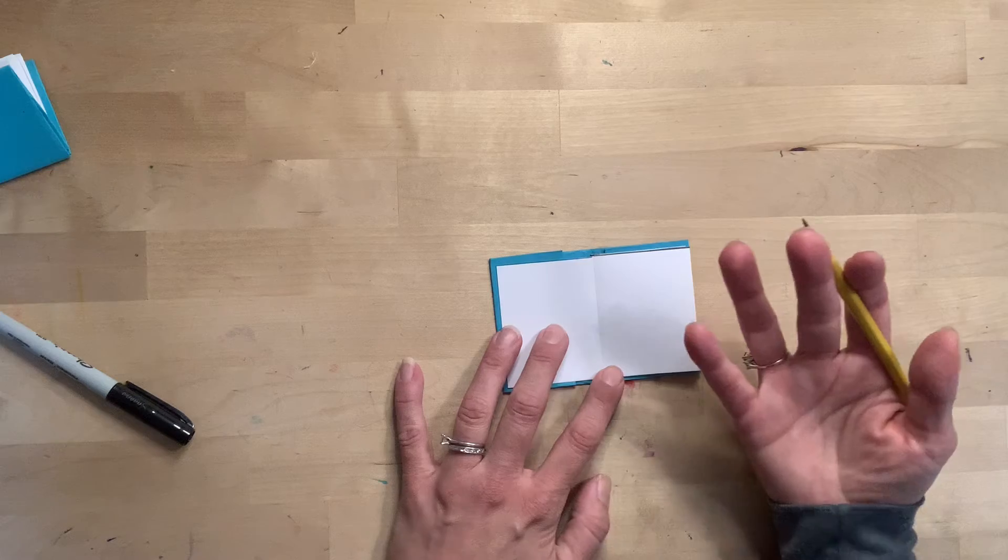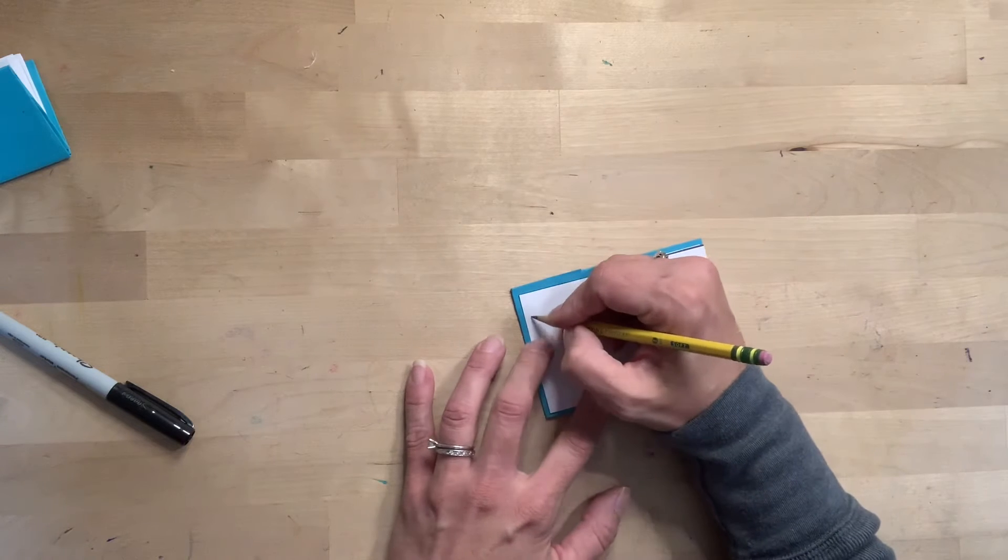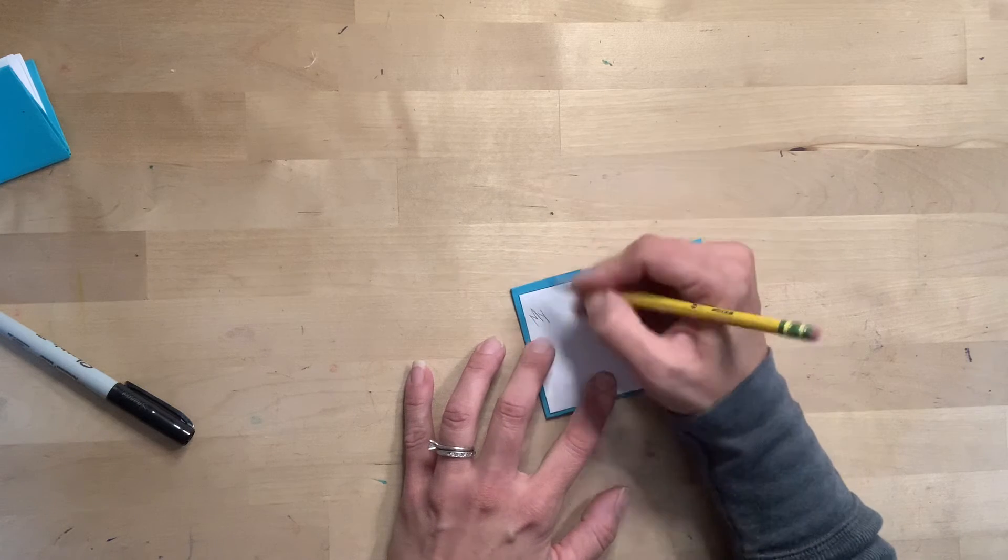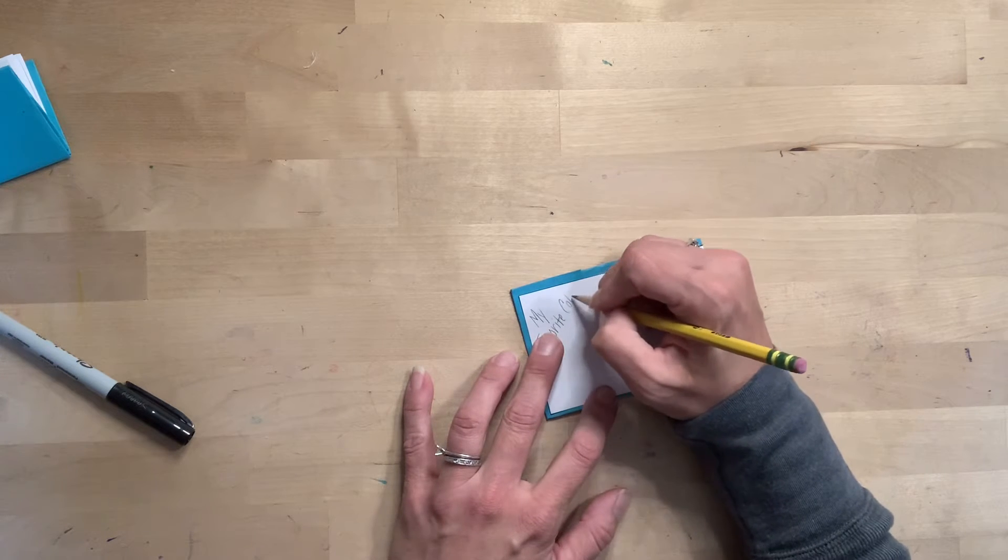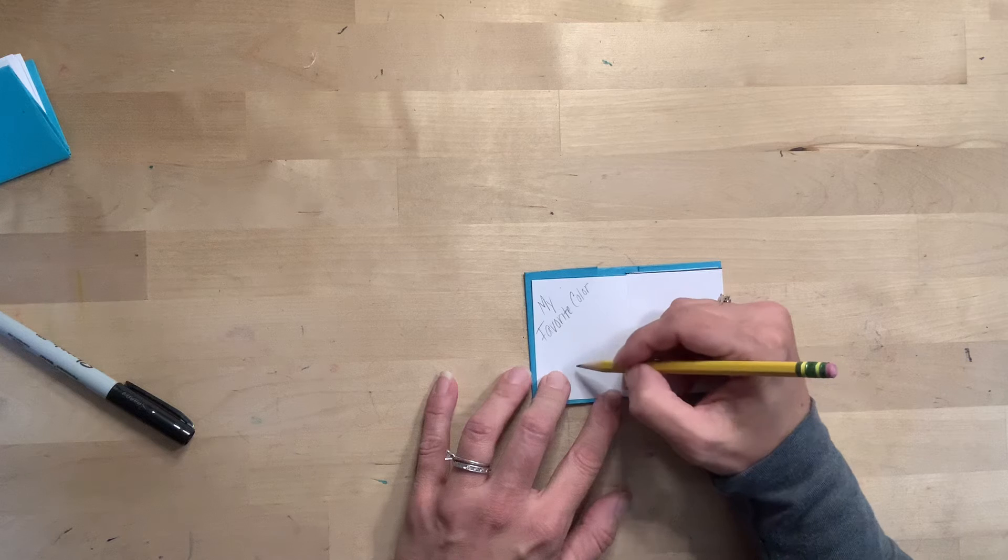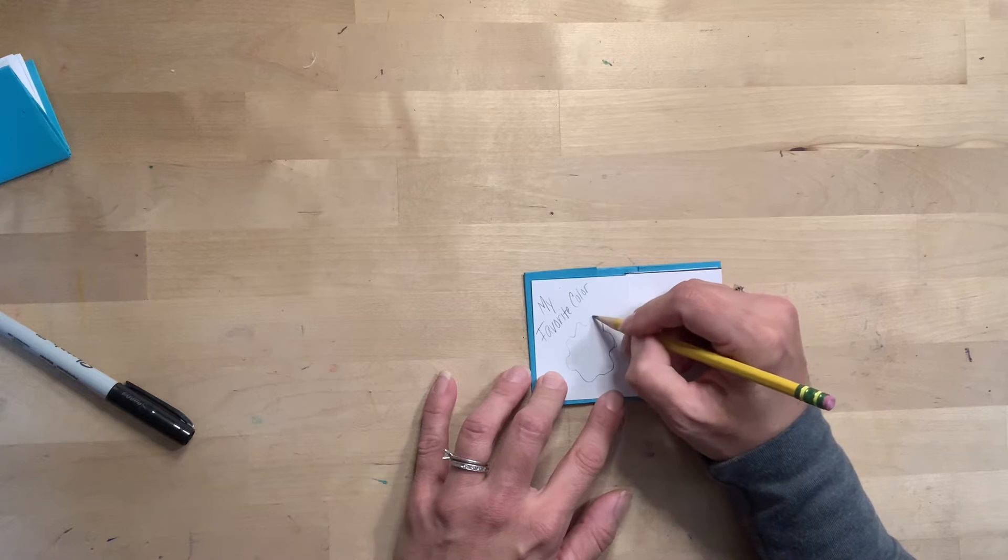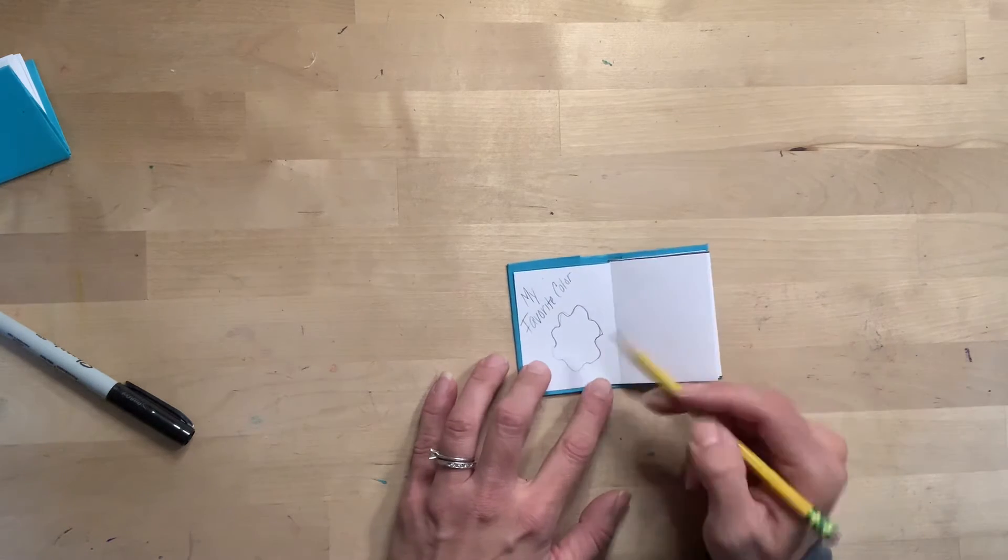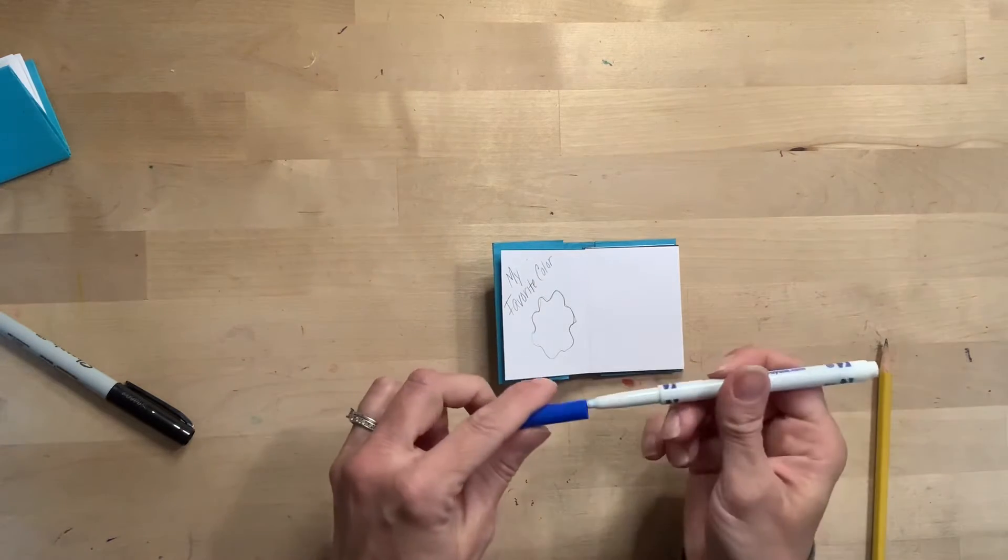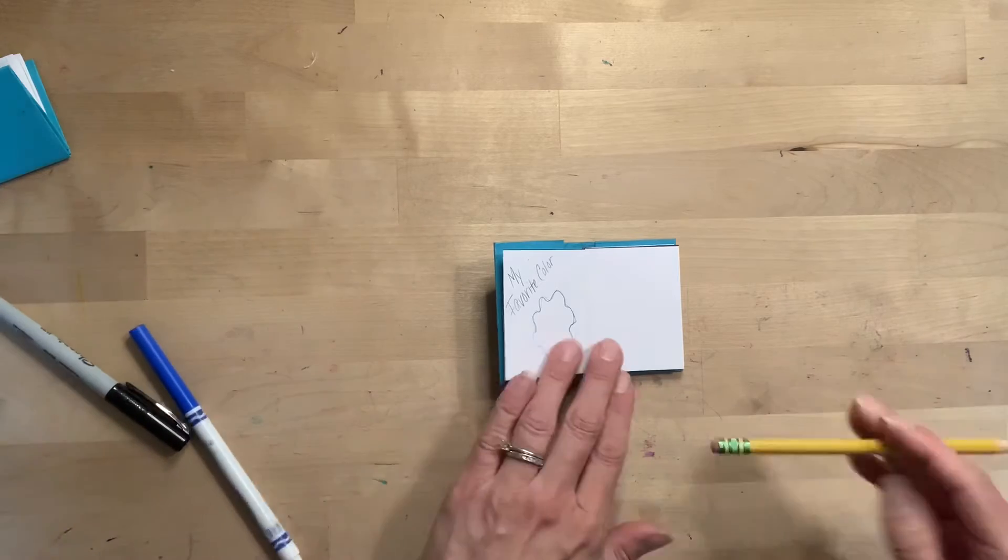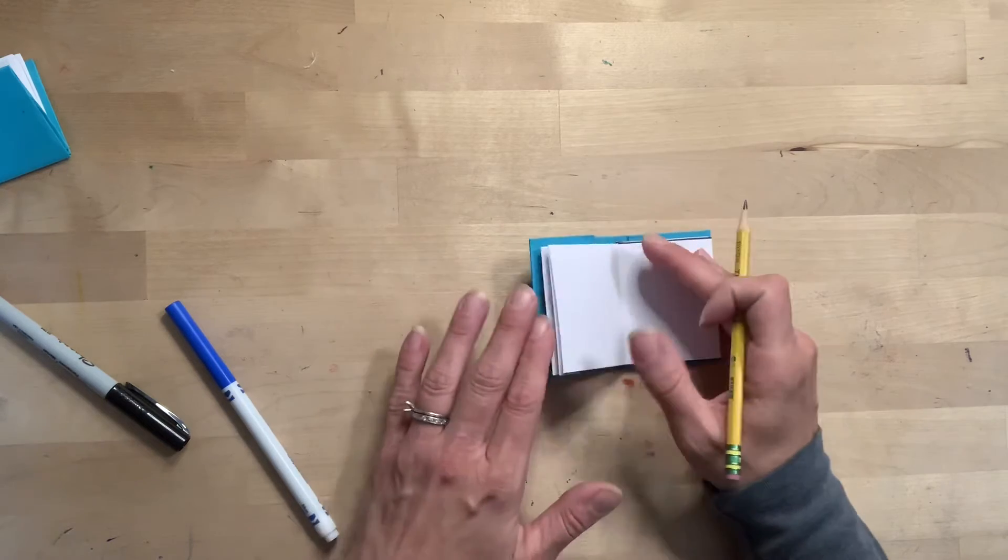On the next page, things you like to do, your favorite color. And like I said, this is going to be a combination of words and drawings. So my favorite color. And I'm just going to make kind of like a paint blob shape. And then with marker, I'm going to go back in and I'll color the paint blob to show my favorite color.